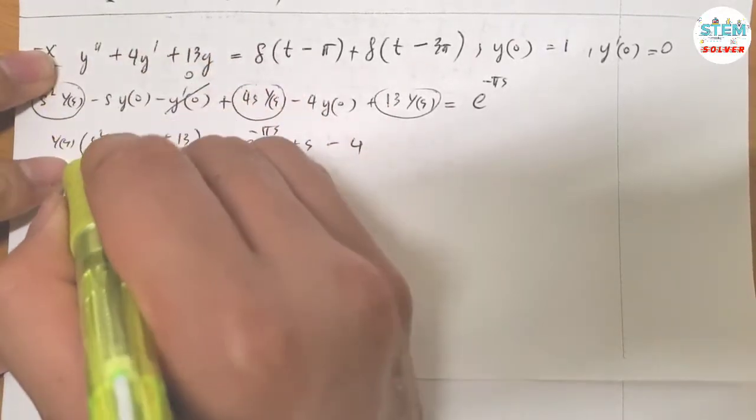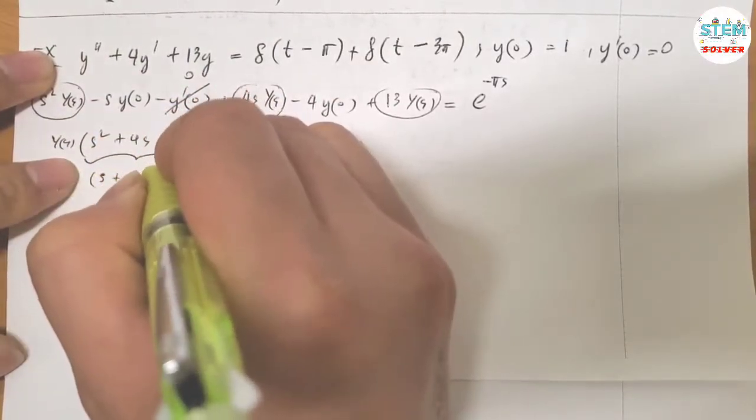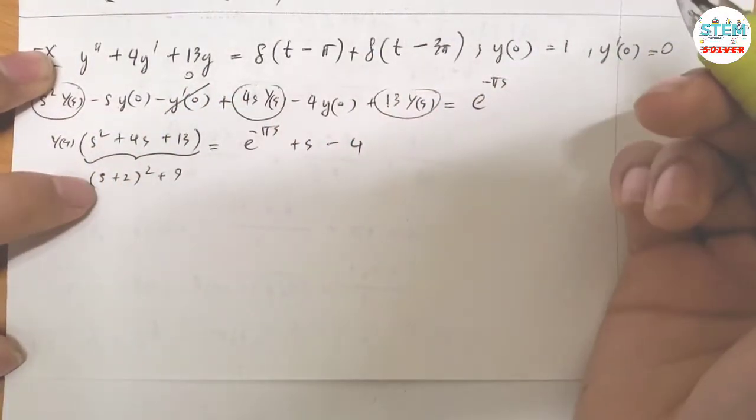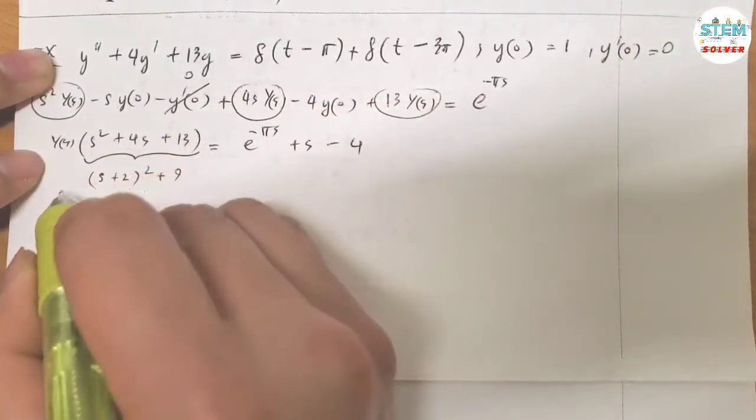Now completing the square of this, I have S plus 2 squared plus 9, right? S squared plus 4S plus 4 plus 9, which is 13. Now divide both sides like this.